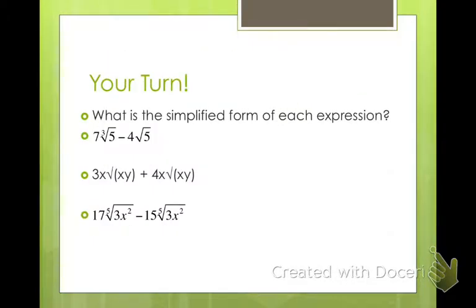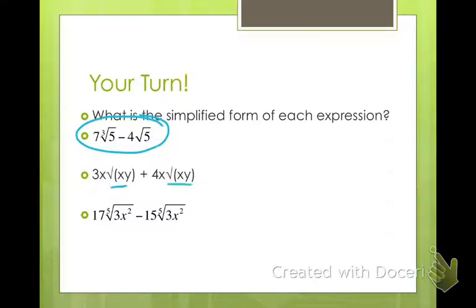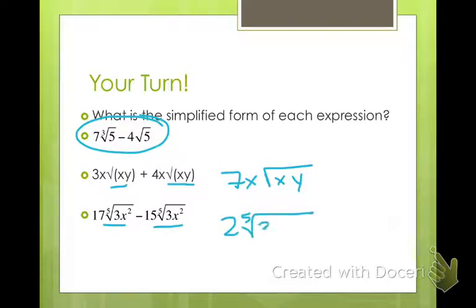Go ahead and combine these if you can, and if you can't, just leave them as they are. Pause the video. For the first one, we have the same radicand but different indexes, so we cannot subtract — this is the simplified form. The second one has same-same, so we combine 4x and 3x to get 7x square root of xy. And the last one: subtract 17 minus 15 to get 2 fifth root of 3x squared.